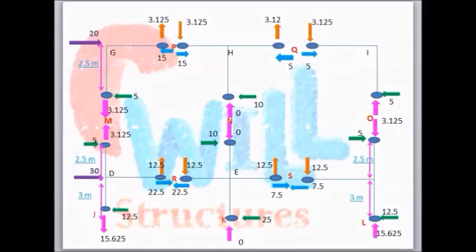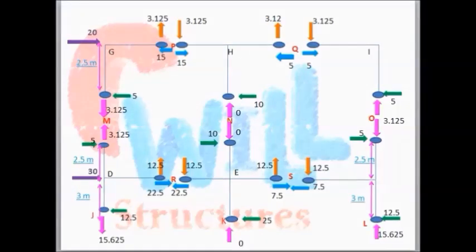This diagram shows the complete solution of this example with all the forces indicated in different colors. The purple color shows the external forces of each story. The pink color shows the axial forces of columns. The green color shows the shear forces for the columns. Sky blue color shows the axial forces of beams. Orange shows the shear forces of the beams.